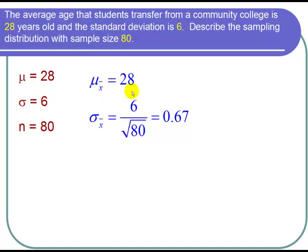The second thing the Central Limit Theorem states is that the standard deviation for the sampling distribution σ sub x bar is always equal to the population standard deviation, in this case 6, divided by the square root of the sample size. So in this case, the square root of 80. And I put that in a calculator and I got 0.67.